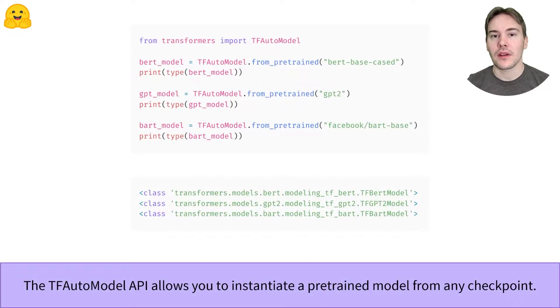As we have seen before, the TFAutoModel class allows you to instantiate a pre-trained model from any checkpoint on the Hugging Face hub. It will pick the right model class from the library to instantiate the proper architecture and load the weights of the pre-trained model inside.